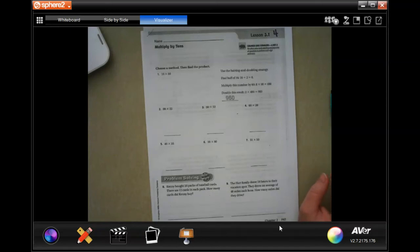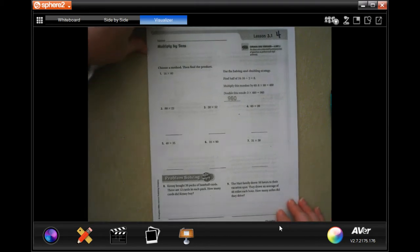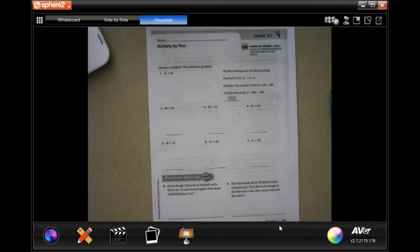Hey guys, welcome to fourth grade, chapter three, lesson one. We're going to go ahead and get started. So this lesson shows you different ways to multiply. We are going to go ahead and use our box method. It seems to be the easiest way for everybody to learn how to do this.